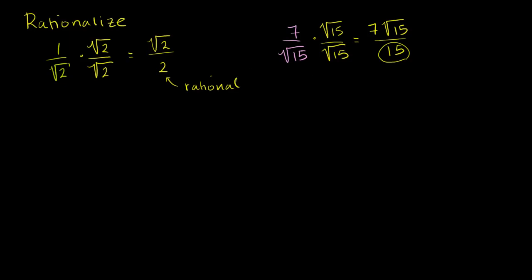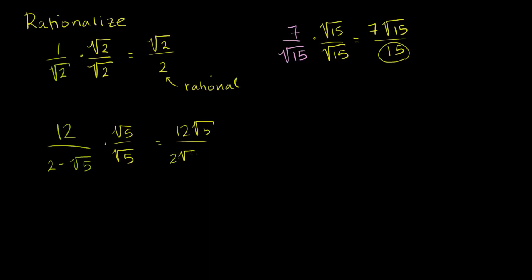Now let's take it up one more level. What happens if we have something like 12 over 2 minus the square root of 5? In this situation, we actually have a binomial in the denominator, and this binomial contains an irrational number. I can't do the same trick here — if I multiply this by square root of 5 over square root of 5, I'm still going to have an irrational denominator. Let me just show you. If I multiply by square root of 5 over square root of 5, the numerator is going to be 12 times the square root of 5. The denominator — we have to distribute — is going to be 2 times the square root of 5 minus the square root of 5 times the square root of 5, which is 5. So you see, it didn't help us. Although this part became rational and became a 5, this part became irrational: 2 times the square root of 5. So this is not what you want to do when you have a binomial that contains an irrational number in the denominator.